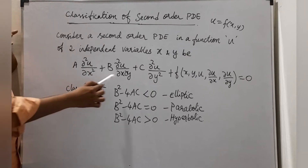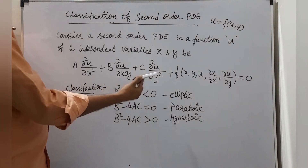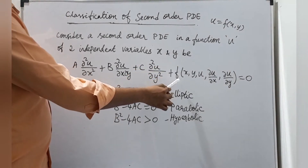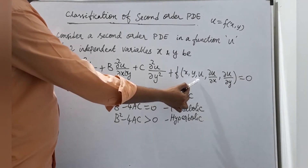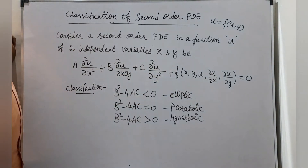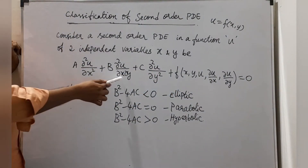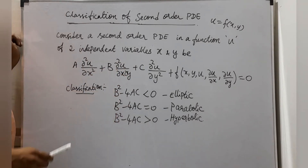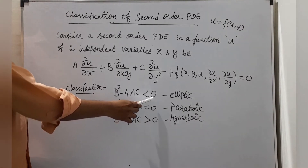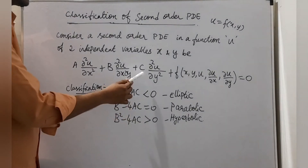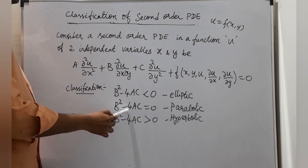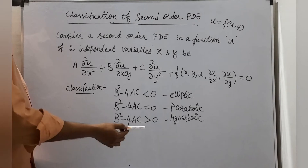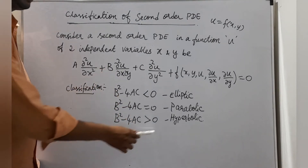We classify using the second derivatives only — no need to use first derivatives and independent variables. We find the coefficients A, B, C of the second order derivatives and calculate B² minus 4AC. If B² minus 4AC is less than zero, the equation is elliptic. If B² minus 4AC equals zero, it is parabolic. If B² minus 4AC is greater than zero, it is hyperbolic.